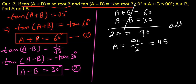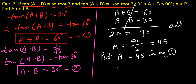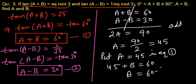Now we substitute a = 45° into equation one: 45 + b = 60. That gives us b = 60 - 45 = 15°.